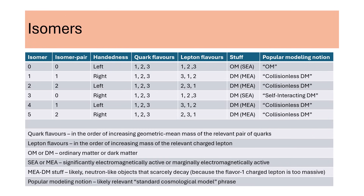We suggest that nature includes six isomers of the set of all known elementary particles except for the photon. Across the isomers, the masses of counterpart elementary particles match. Popular modeling suggests that ordinary matter elementary particles that exhibit handedness are left-handed. We suggest that three of the isomers associate with left-handed elementary particles and three associate with right-handed elementary particles. For ordinary matter neutrinos, popular modeling suggests that flavor eigenstates do not necessarily match mass eigenstates. We suggest that across the isomers, charged lepton flavors do not necessarily match charged lepton masses.